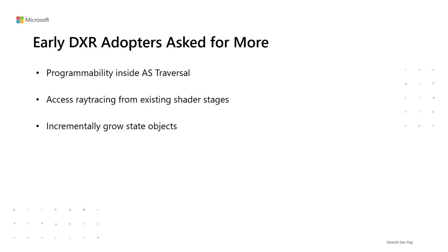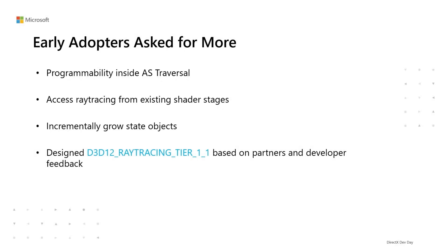Back in 2018, Microsoft worked with hardware partners to design and release DXR, which brings never-before-seen photorealism to a long list of games. As more and more developers used DXR, we received similar feedback: developers want more programmability inside acceleration structure traversal and to access ray tracing from existing shader stages. They also wanted to lower CPU overhead in streaming scenarios when new shaders need to be added to a state object already in use. We explored several options and developed additional features grouped under DXR Tier 1.1.